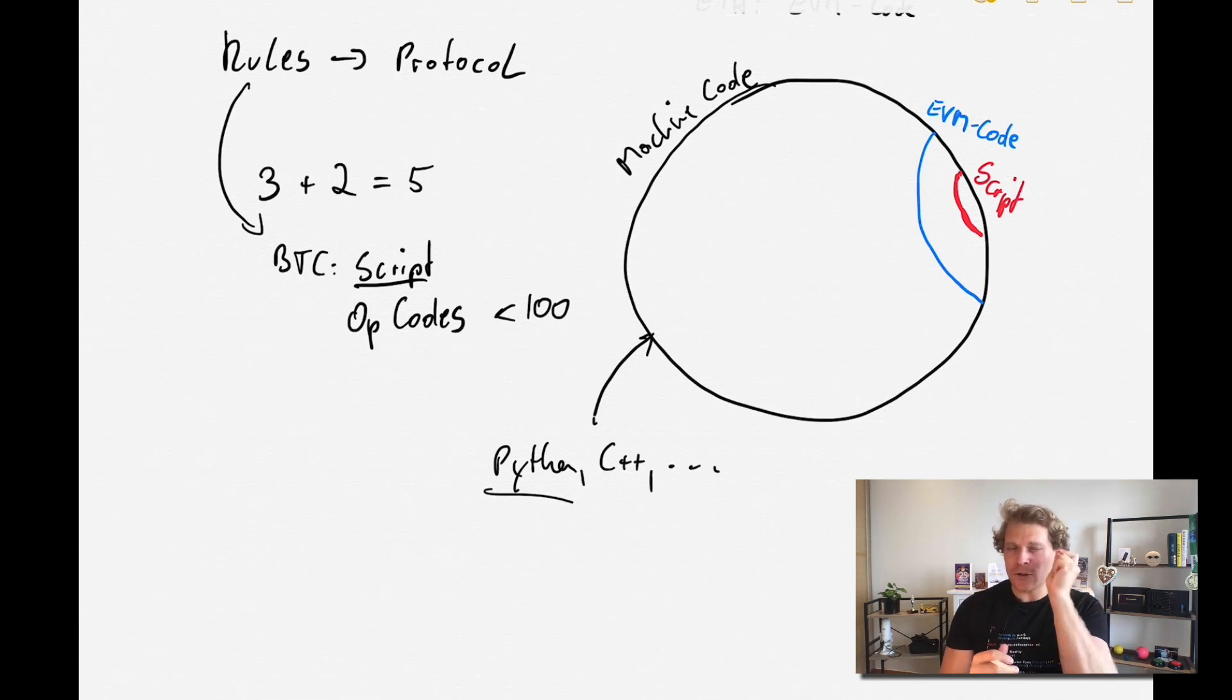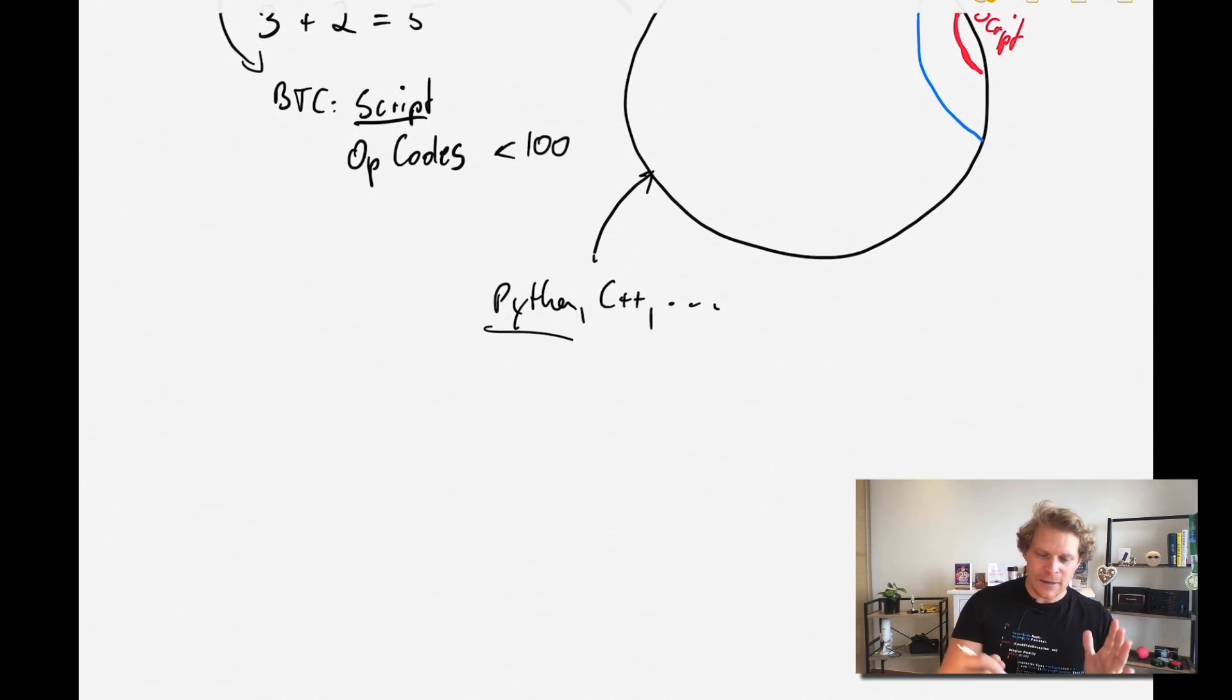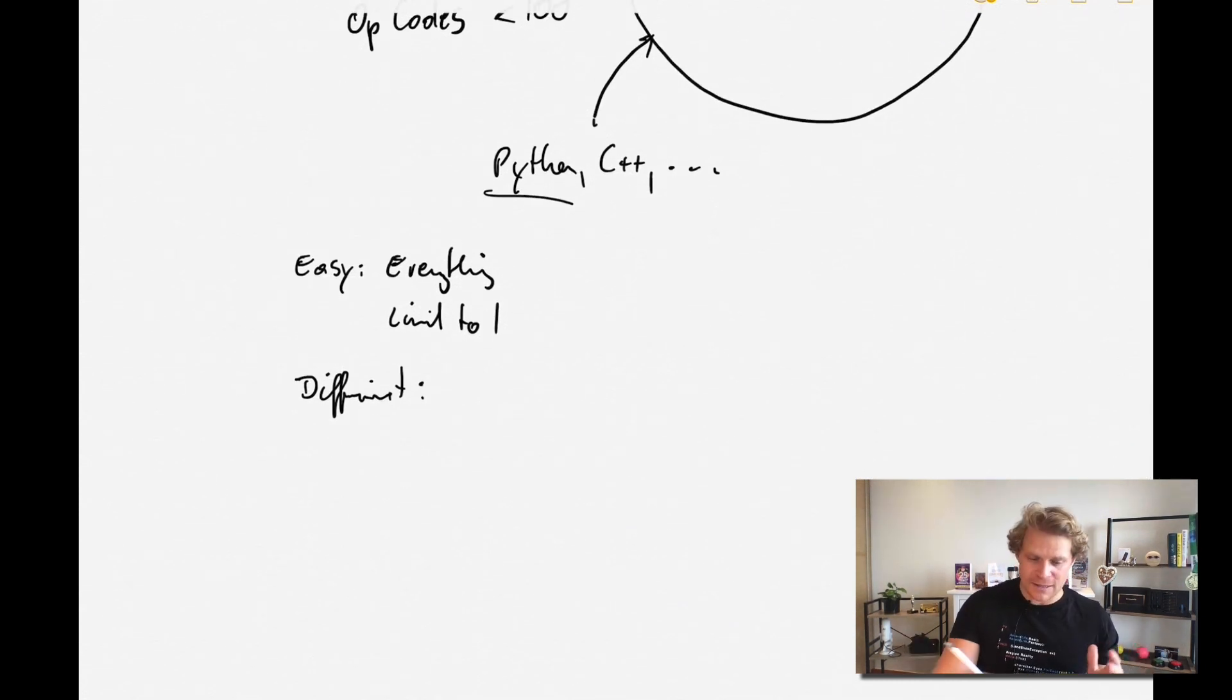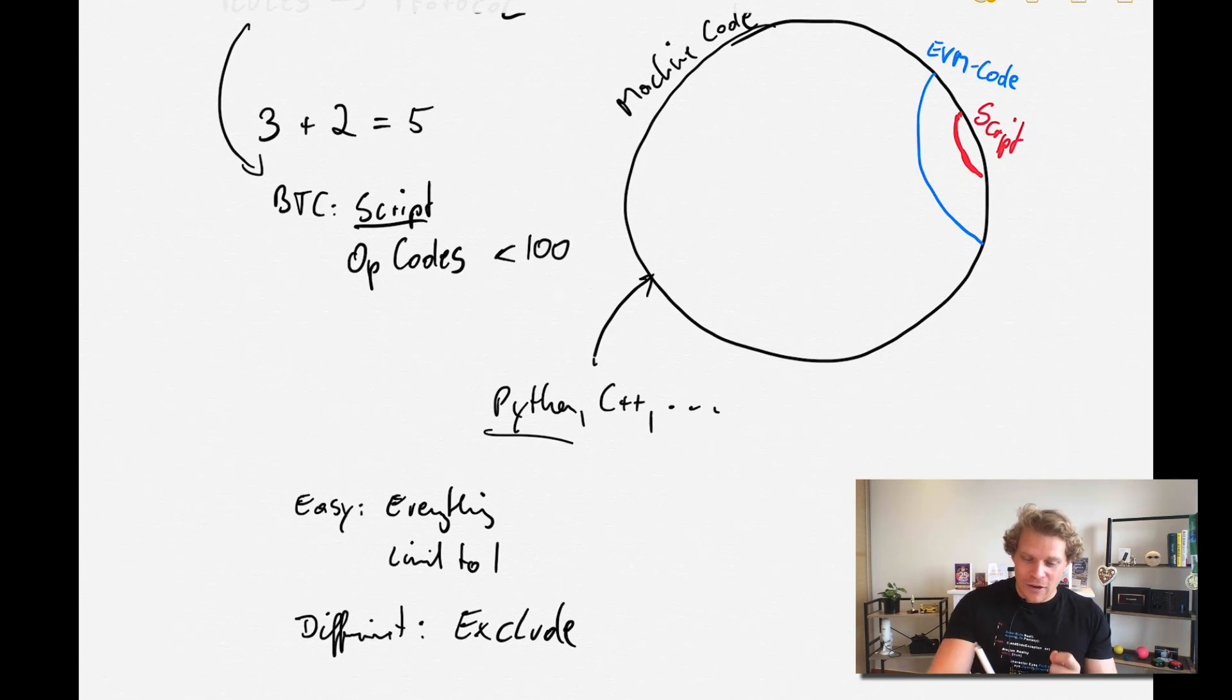This is actually very difficult in coding. It's quite easy to do everything, and it's quite easy to limit to one thing only. But it's very difficult to allow a lot of things but exclude a lot as well. It's very difficult because, to compile down, it's just really difficult because there's so many exceptions, so many dependencies.